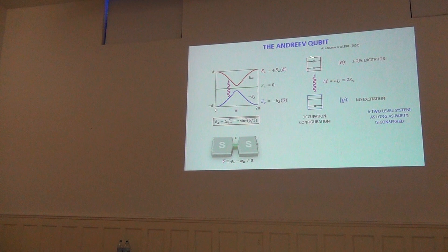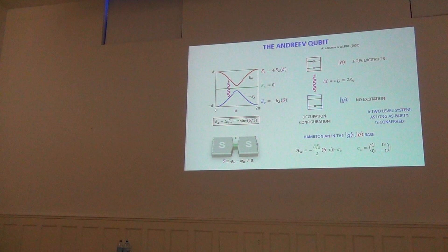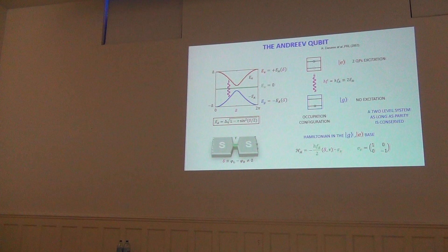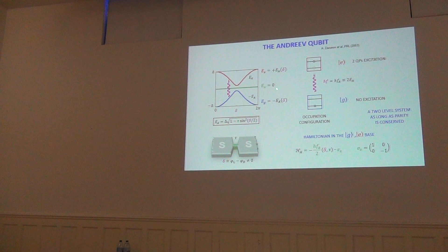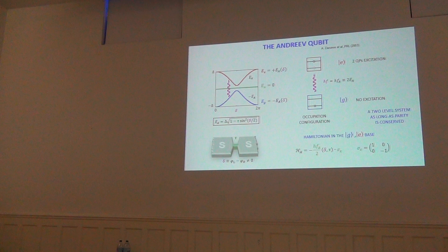The Andreev qubit Hamiltonian is written using the sigma-Z matrix — minus the qubit energy over two for the ground state, plus the qubit energy over two for the excited state. The odd states, shown as a green line, are not coupled by photons and are excluded from this circuit QED treatment for now, though they will appear in the experiments.